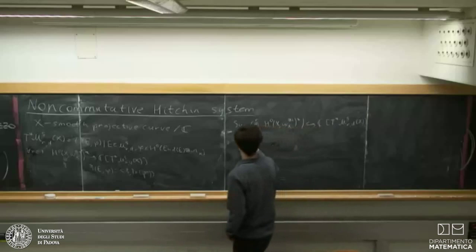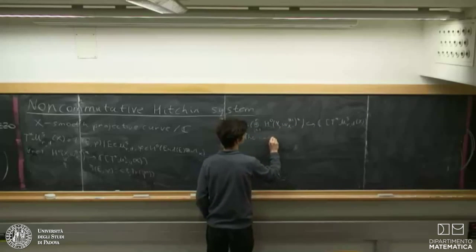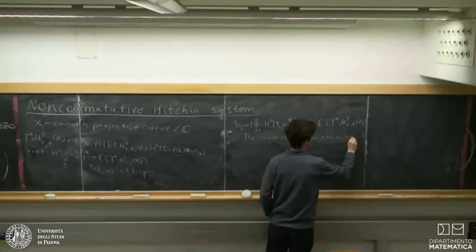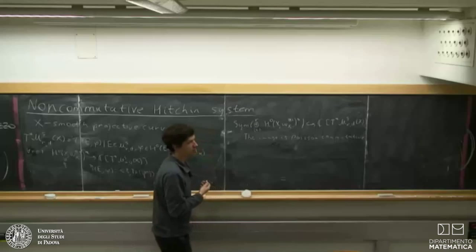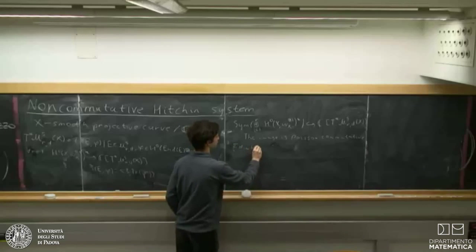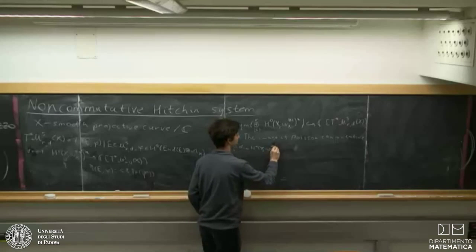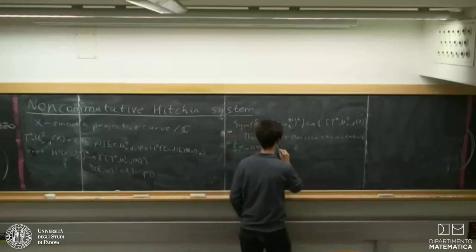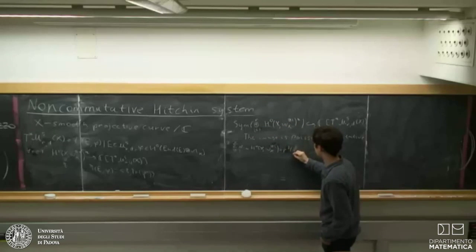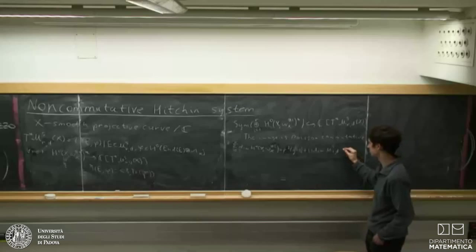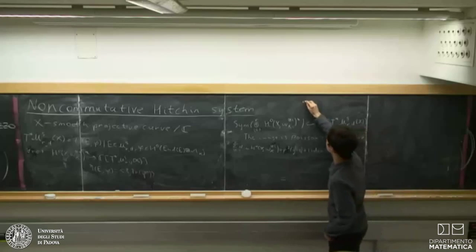You have such maps for any n, and it is well known that if you take the symmetric algebra of the direct sum of these spaces for values from 1 to r*, this embeds algebraically independently into functions on the cotangent bundle. The image is Poisson commutative, and you can compute dimensions to see that the sum of dimensions of H^0 of omega to the power i for i from 1 to r equals r² times (g−1) plus 1, which equals the dimension of the moduli space. So we get a Hamiltonian integrable system — this is the Hitchin system, where g is the genus of X.